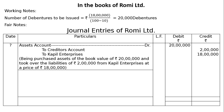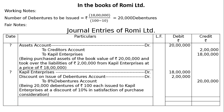The next entry: here the purchase consideration is not given directly; we found it out as assets minus liabilities. Hence, we have to debit Kapil Enterprises by Rs. 18 lakhs to cancel the credit. That is Kapil Enterprises debited Rs. 18 lakhs.